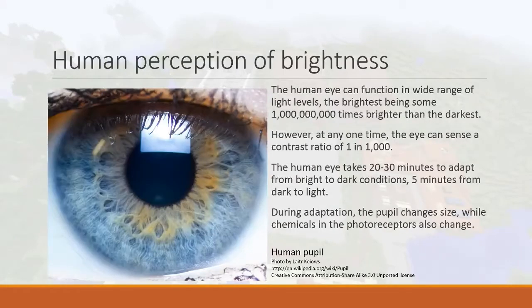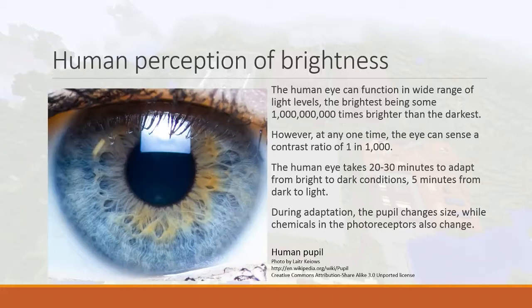Human perception of brightness. The human eye can function in a wide range of light levels, the brightest being about one billion times brighter than the darkest. However, at any one time, the eye can sense a contrast ratio of 1 in 1,000 — the brightest thing you can see is one thousand times brighter than the darkest.